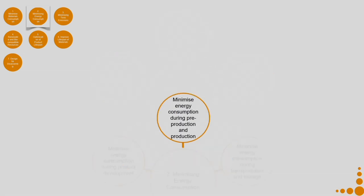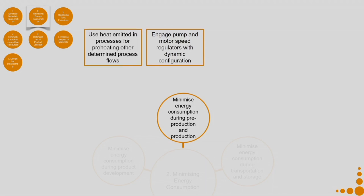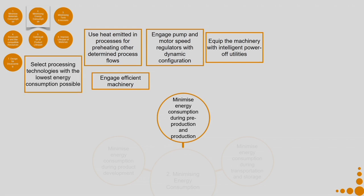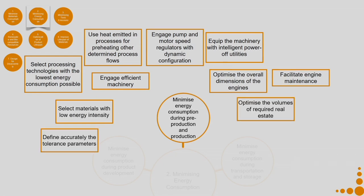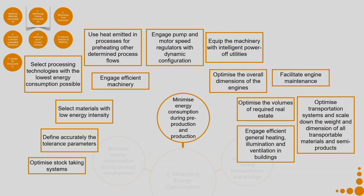Some examples of how to minimize energy consumption during pre-production and production: engage pump and motor speed regulators with dynamic configuration, use heat emitted in processes for preheating other process flows, engage efficient machinery and equip it with intelligent power utilities, select processing technologies with the lowest energy consumption, optimize overall dimensions of engines, facilitate engine maintenance, select materials with low energy intensity, optimize volumes of required real estate, define accurately the tolerance parameters, and engage efficient general heating, illumination, and ventilation in buildings.